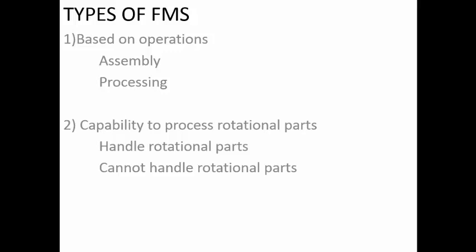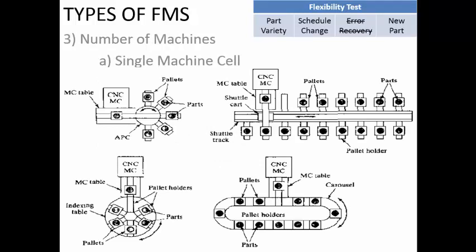The next type of classification is based on the number of machines present. In a single machine cell, the system has only one machine — various parts are fed into it, all processing steps are carried out in that one machine, and when the part is completed it exits. Raw materials are loaded into the material handling system, which moves the component into the machine. The machine detects which component is present, the machining activity takes place, and once completed the part goes to the unloading area.